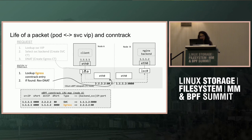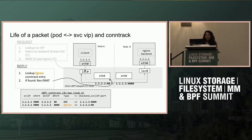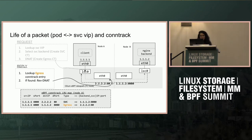That's how connection tracking works in Cilium. As you can see, it created two entries: one to track the client talking to the service IP so all subsequent packets in this flow select the same backend, and the second to match replies so we can do the reverse destination DNAT.